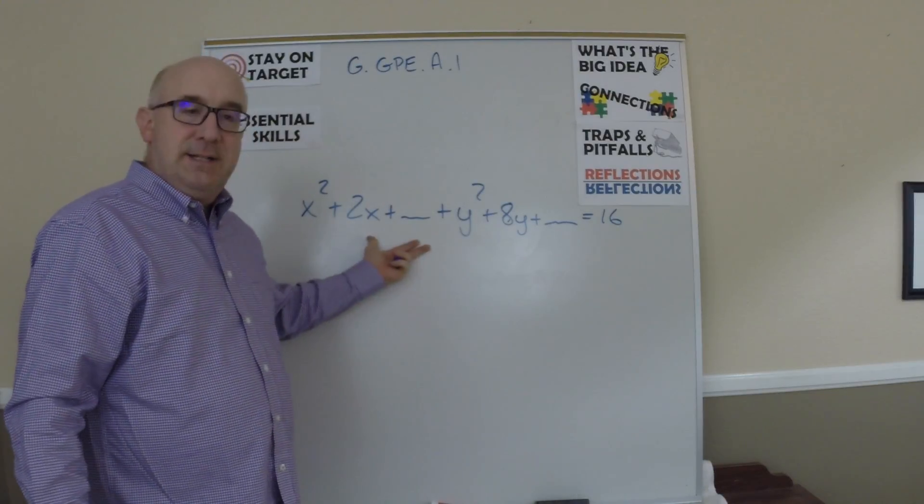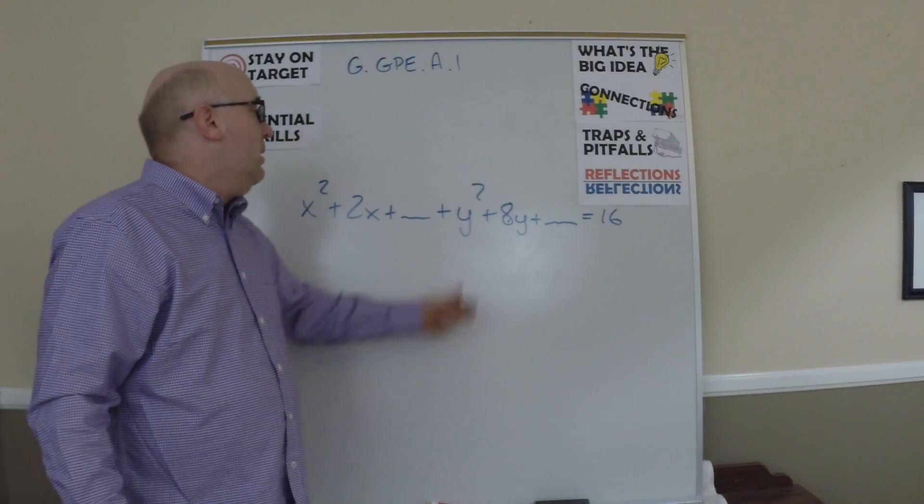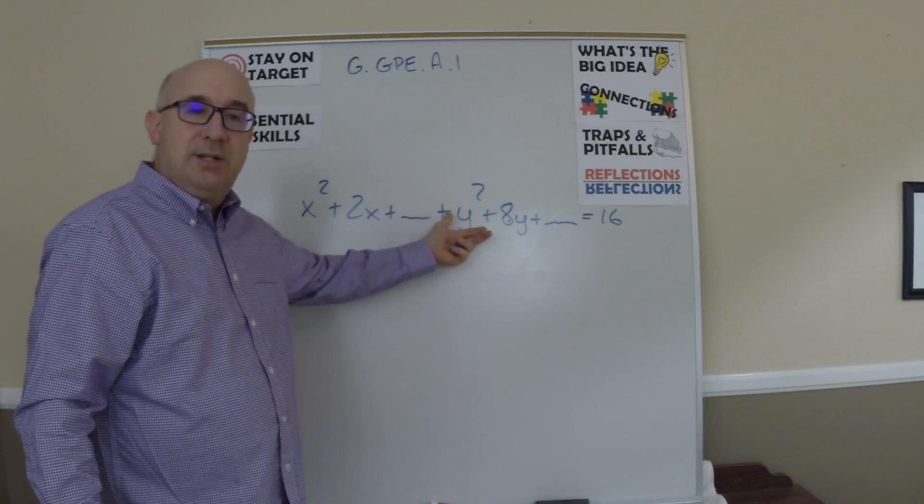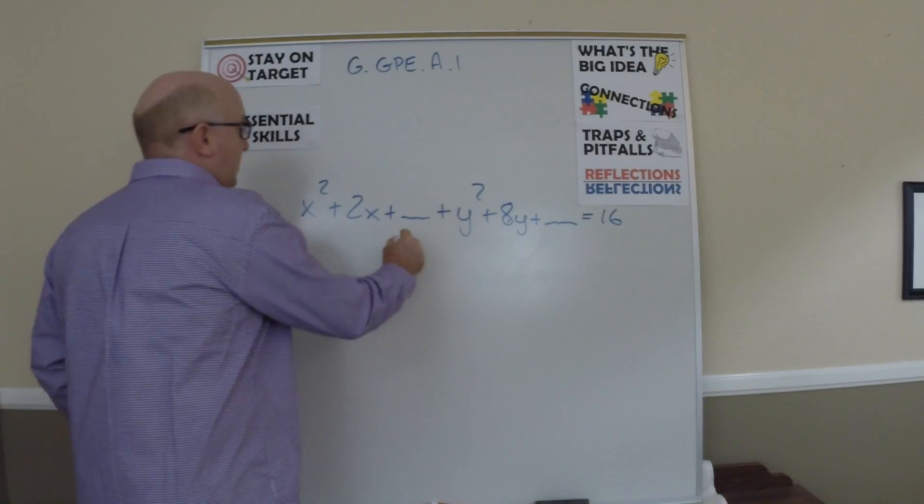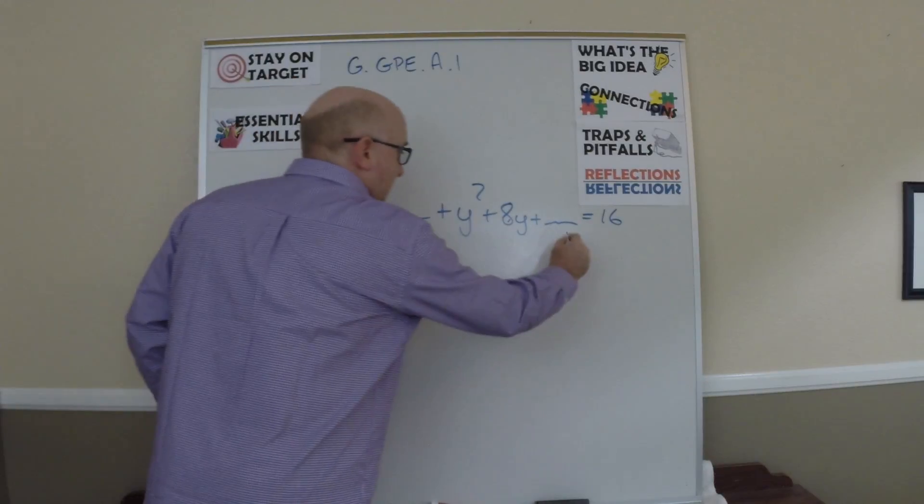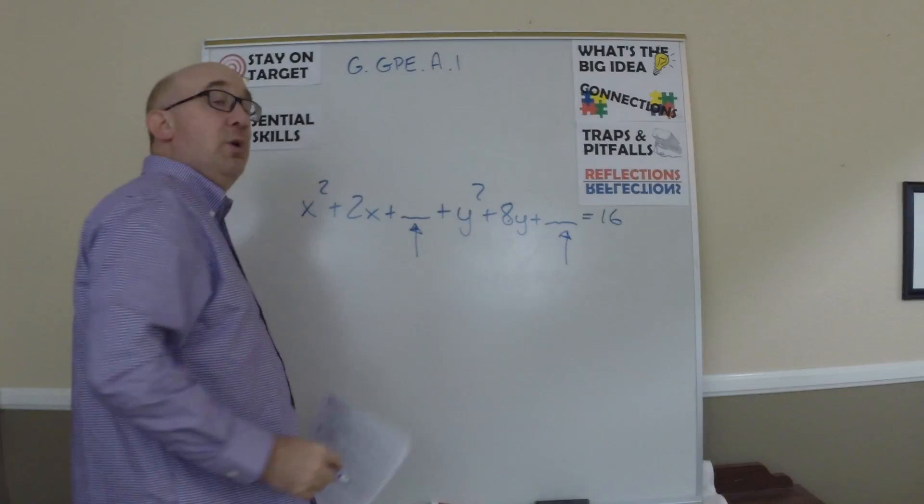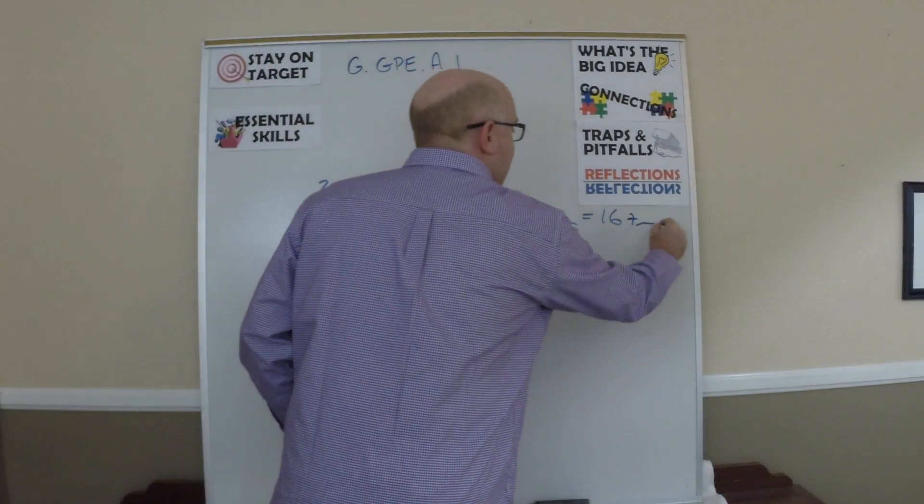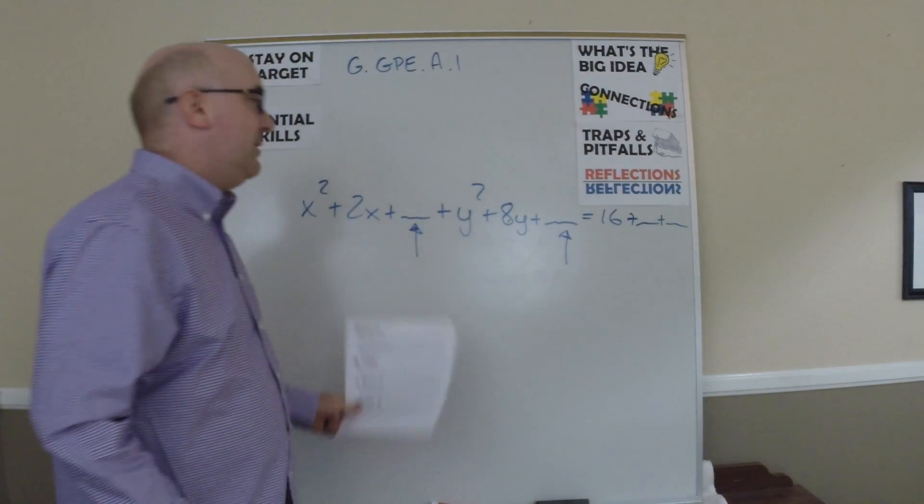I organize my X's and X squareds together. My Y and my Y squared together. And then begin to look at what do I need to put in here? What do I need to put in here? And always remembering that it has to be added to the other side as well.